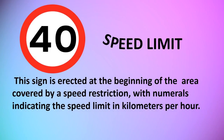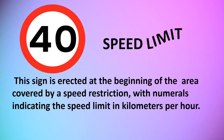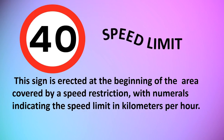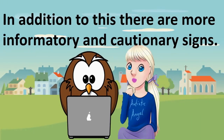Speed Limit: this sign is erected at the beginning of the area covered by a speed restriction, with numerals indicating the speed limit in kilometers per hour. In addition to this, there are more informatory and cautionary signs, which we will discuss later. Thank you for the information!